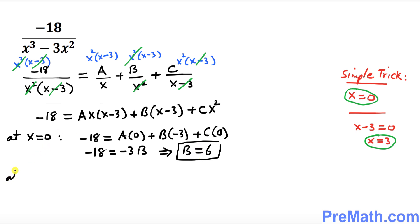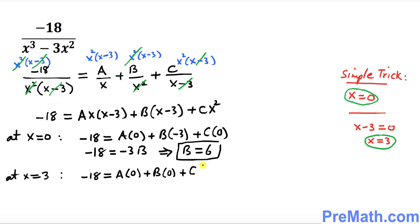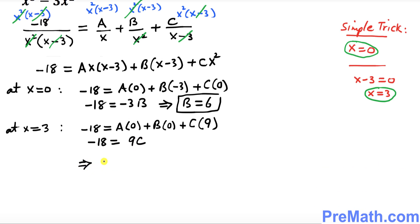Now plug in x equals 3. On the left side we still have negative 18. The terms with x minus 3 become zero, so we get negative 18 equals C times 3 squared, which is 9. Therefore negative 18 equals 9C, giving us C equals negative 2.